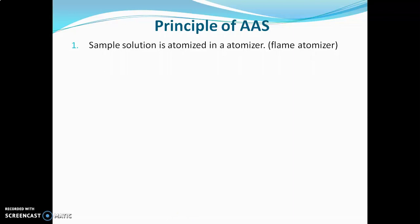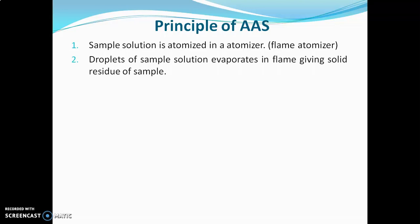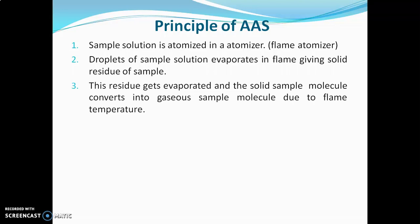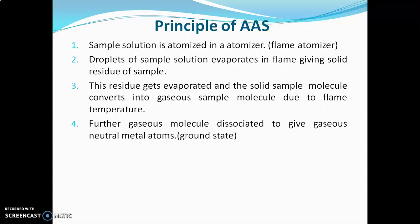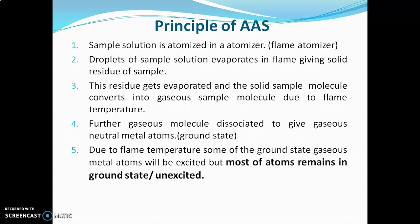The sample solution is aspirated into the flame. The droplets of sample solution get evaporated in the flame and the solid residue of the sample remains. This solid residue gets vaporized and solid sample molecules convert into gaseous sample molecules due to the flame temperature. Further, these gaseous molecules dissociate to give gaseous neutral metal atoms which are at the ground state. Due to the flame temperature, some of the ground state gaseous metal atoms will be excited, but most of the atoms remain in the ground state or unexcited state.